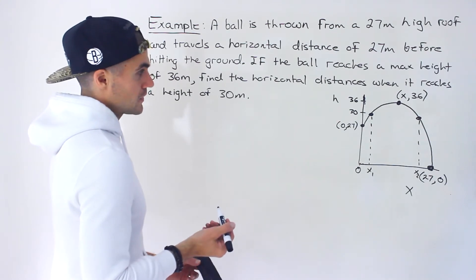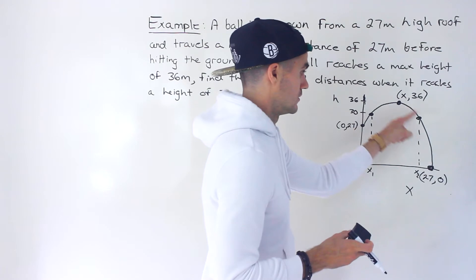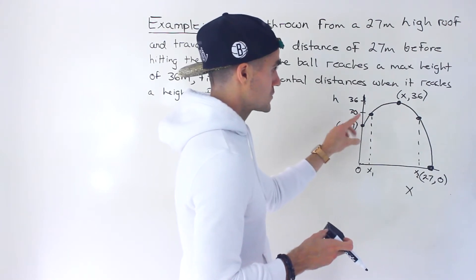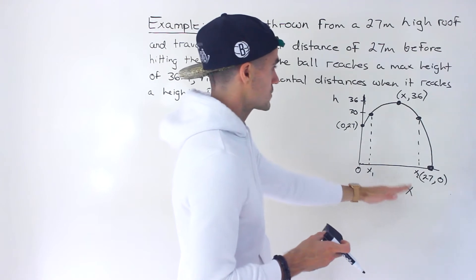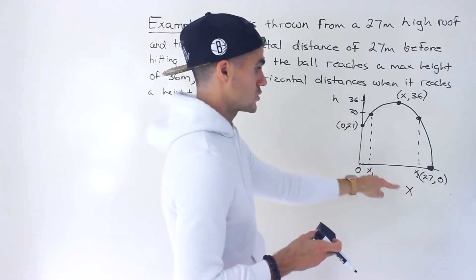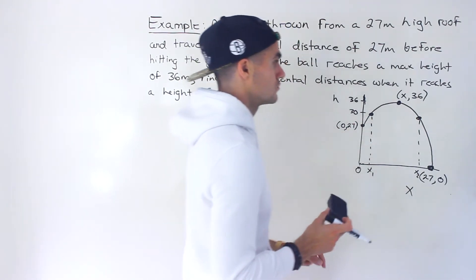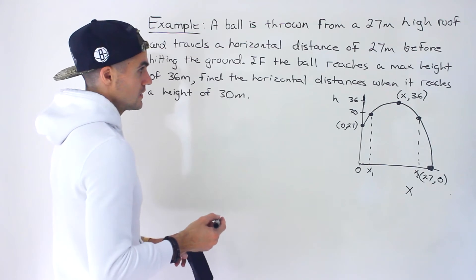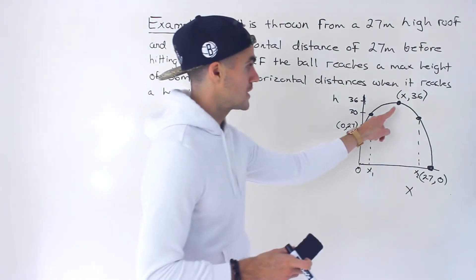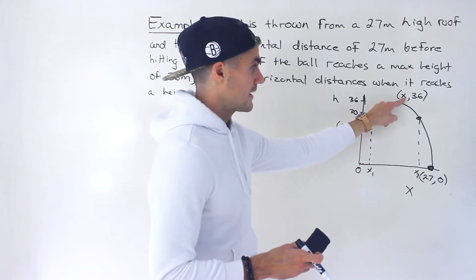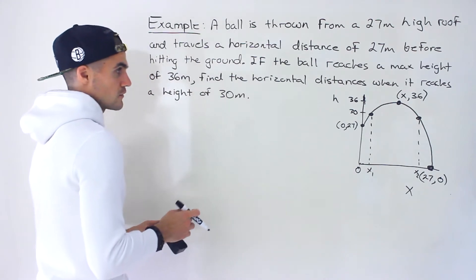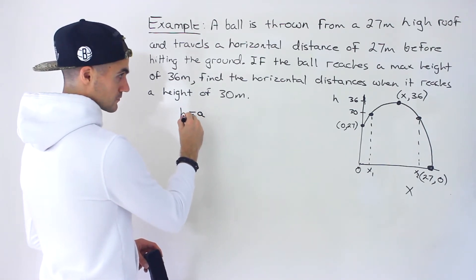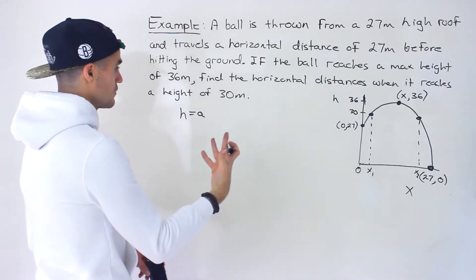So initially the first step is we have to get an equation for this quadratic. Once we have the equation — h in terms of x — we can plug in that h value of 30 and solve for x, which should give us those two x values. The tricky part is getting the equation. Because we're given some information about the vertex — not the x value, but we are given the h value of the vertex — I feel like using vertex form is going to be best.